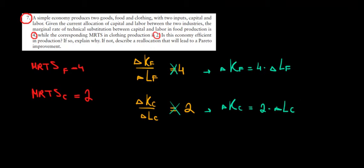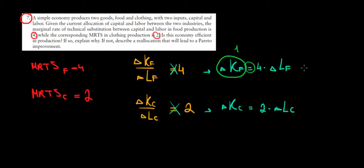Suppose the food company wants to exchange one unit of capital. How much labor must it give up? That would be 1/4 units of labor, because 4 times 1/4 equals 1. In other words, one unit of capital for the food company is worth 1/4 units of labor for the food company.